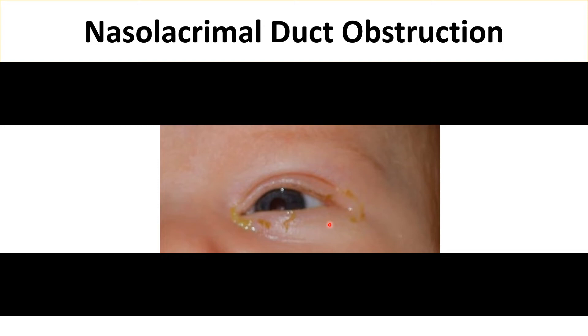The components of tears are lipid, water, and mucus. When the water dries a little bit around the eye, the mucus will accumulate and it may be misunderstood as eye infection.